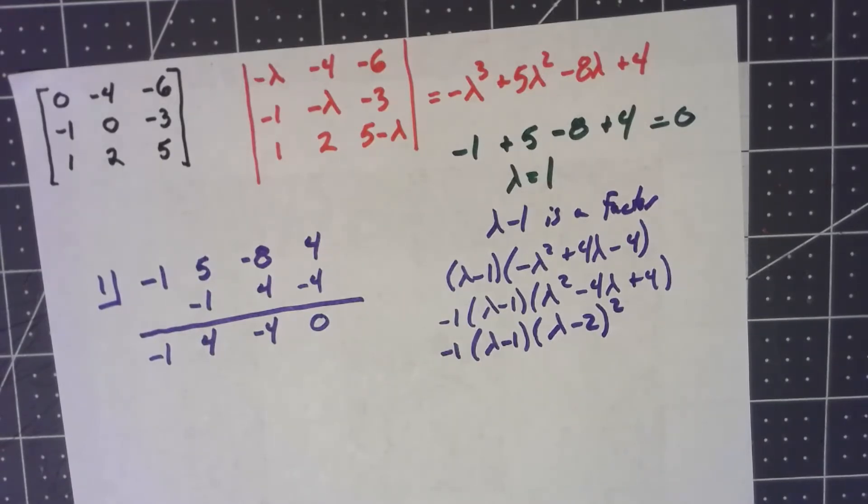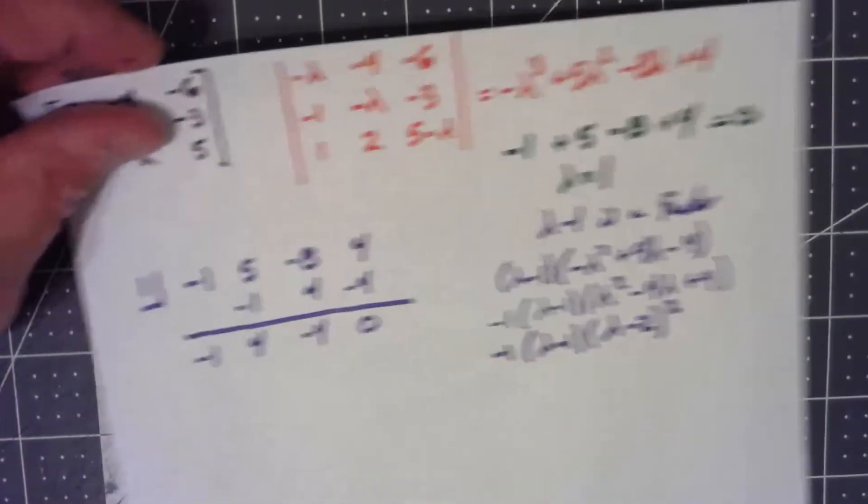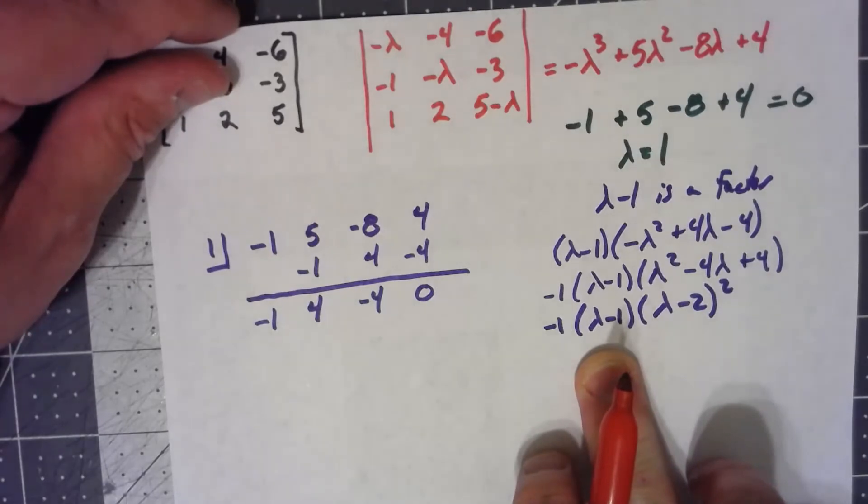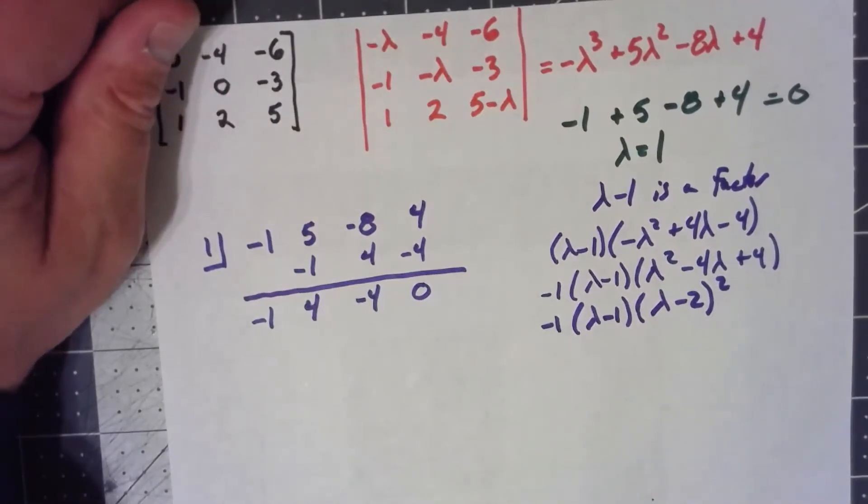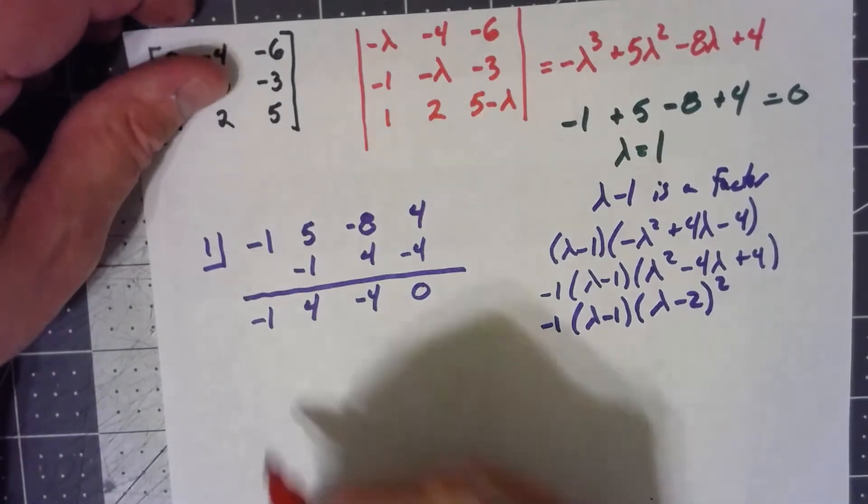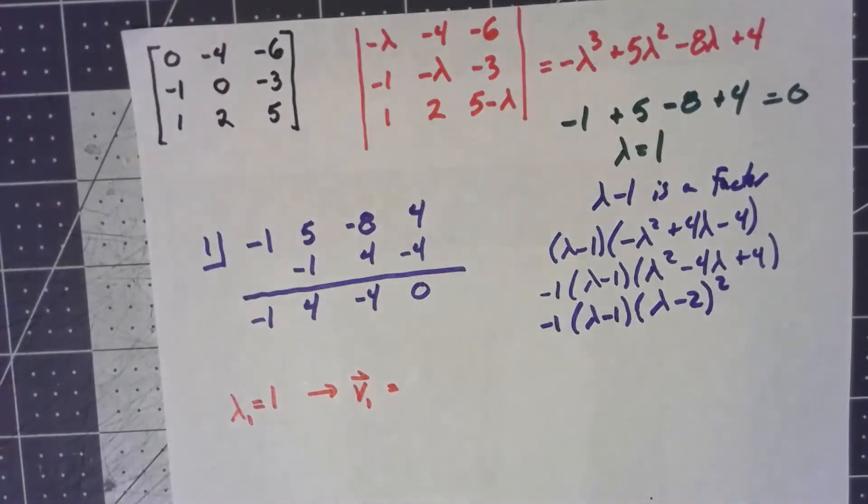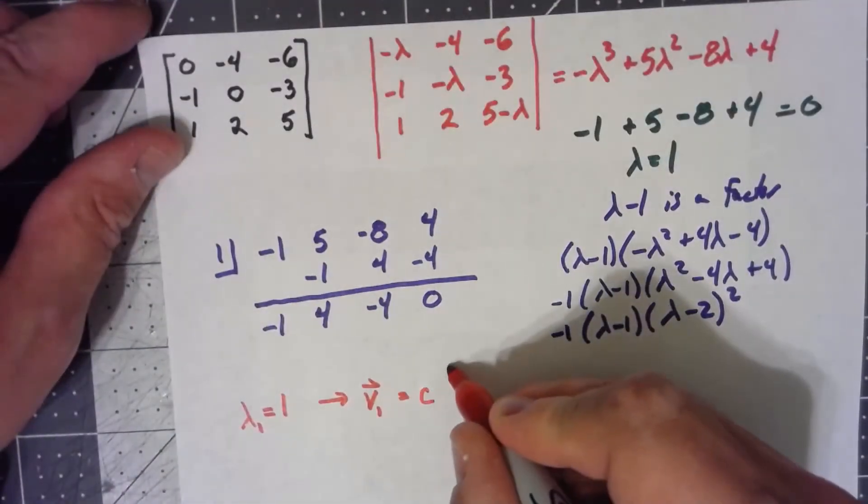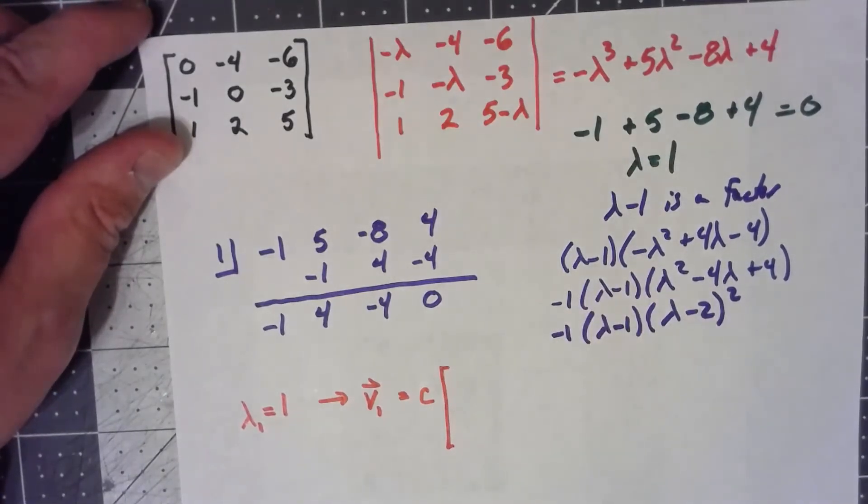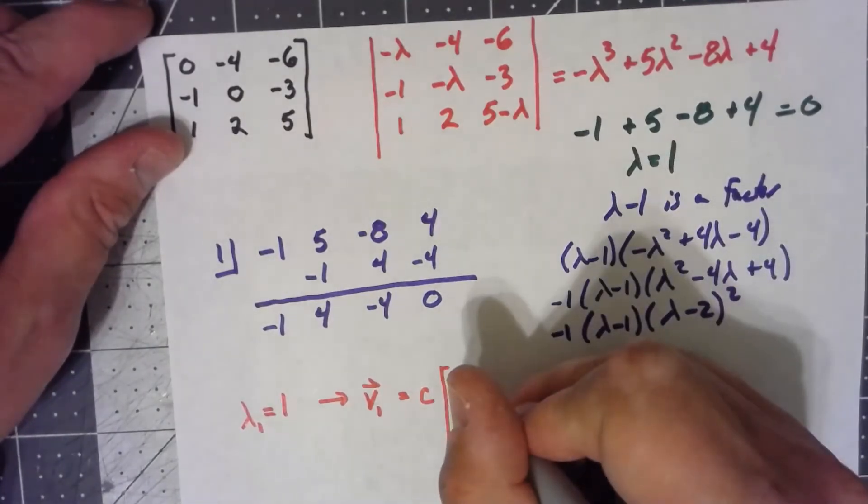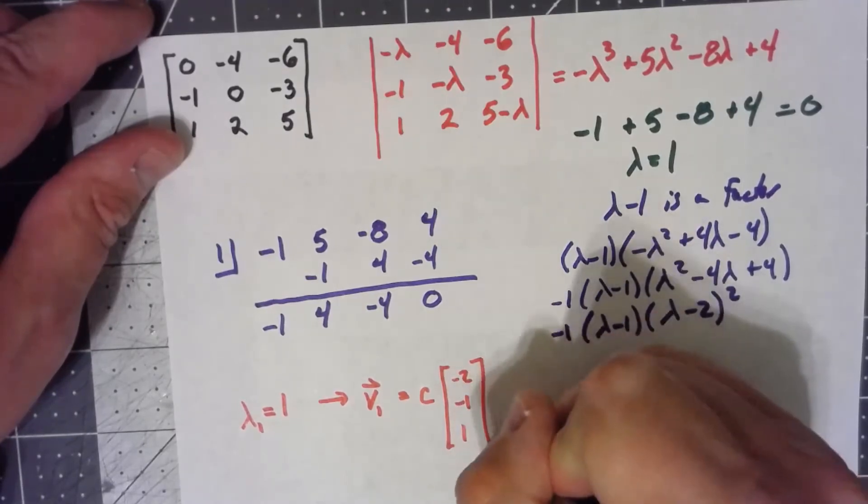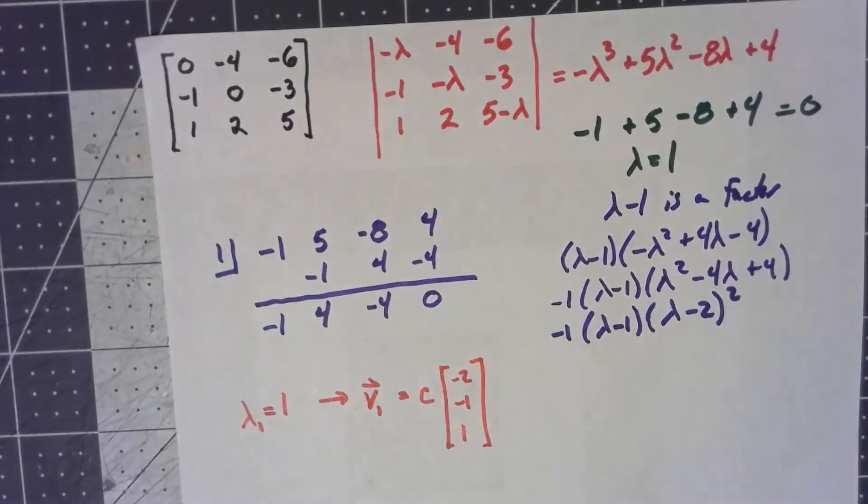Trying to skip over some of the details here, the lambda equals one is very straightforward. If lambda equals one, we get an eigenvector which is any constant times [-2, -1, 1]. And again, I'll let you go ahead and verify that that actually works.